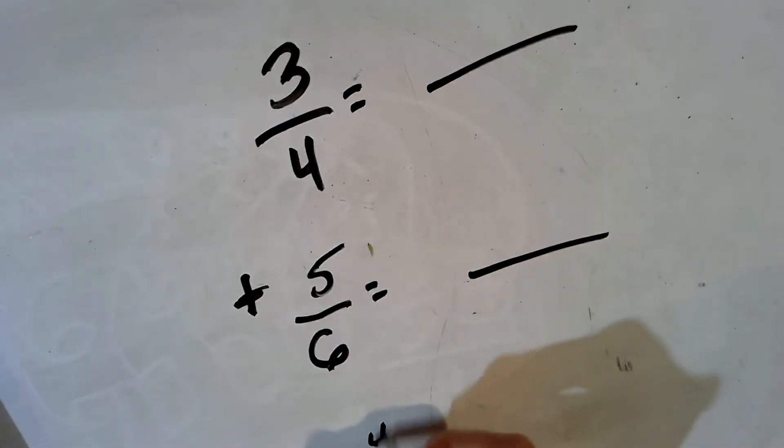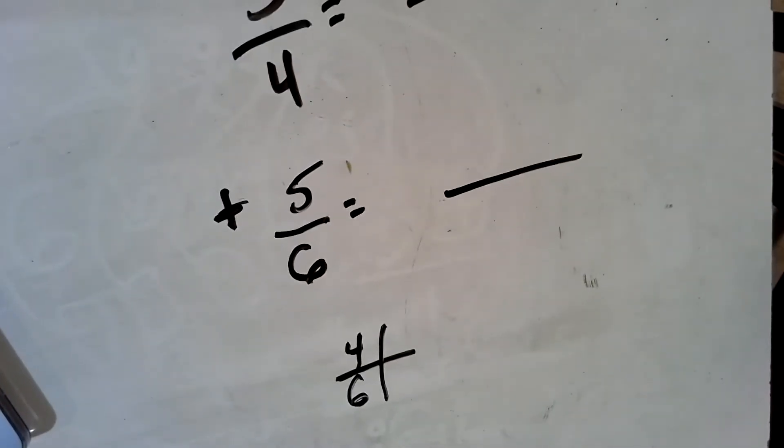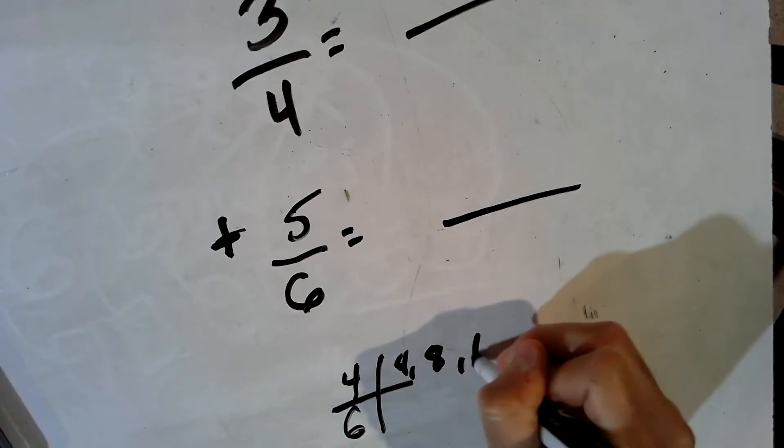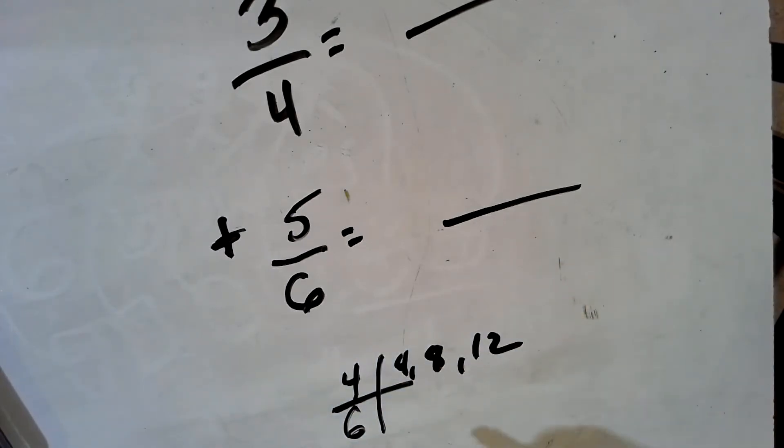So I have to think what are multiples that 4 and 6 have in common. We call these the least common multiple of 4 and 6. So I think 4, 8, 12, I'm going to stop there. That's the first three multiples because I know that 12 is a common multiple.